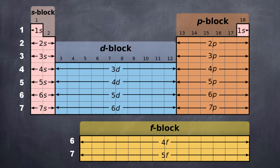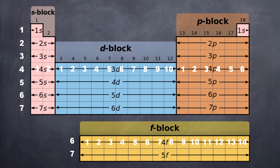The maximum number of electrons that we can assign to any particular sublevel is limited by the number of elements in each block. The S block can hold a maximum of two electrons, the P block a maximum of six, the D block a maximum of ten, and the F block a maximum of fourteen. This corresponds to values assigned from quantum numbers, but here we're just looking at how to use the periodic table to assign electron configurations.